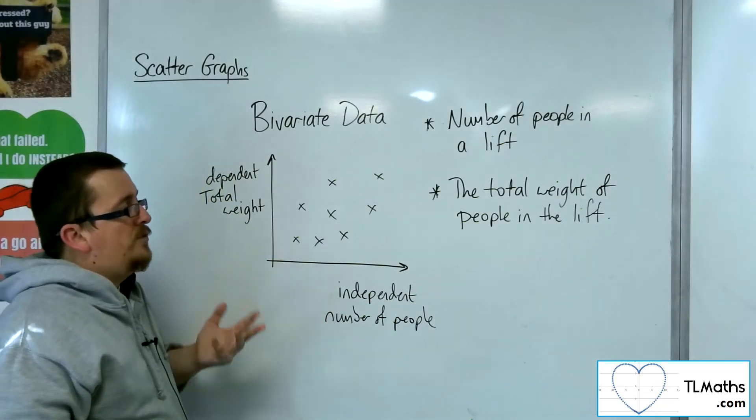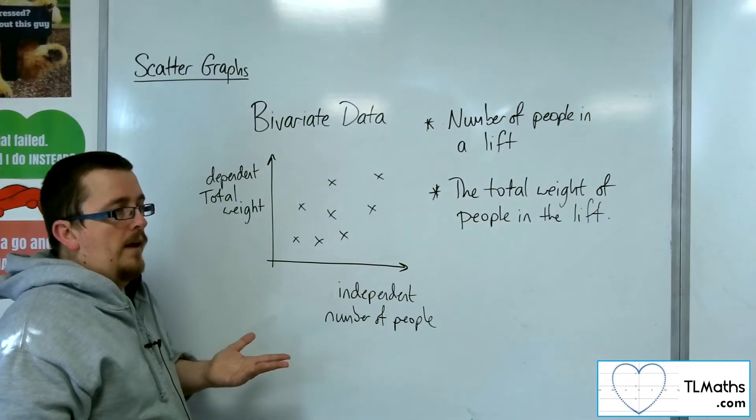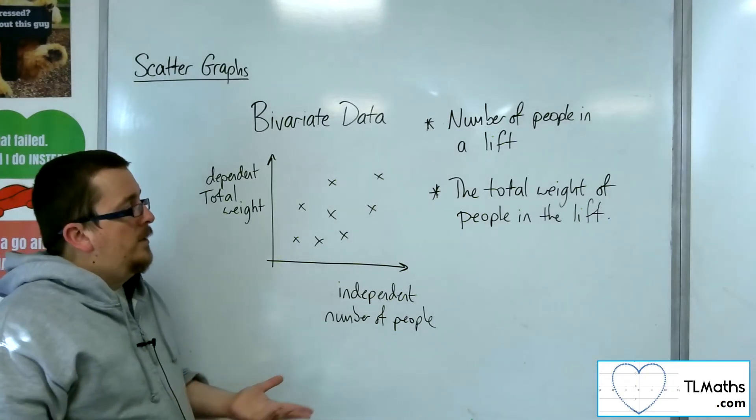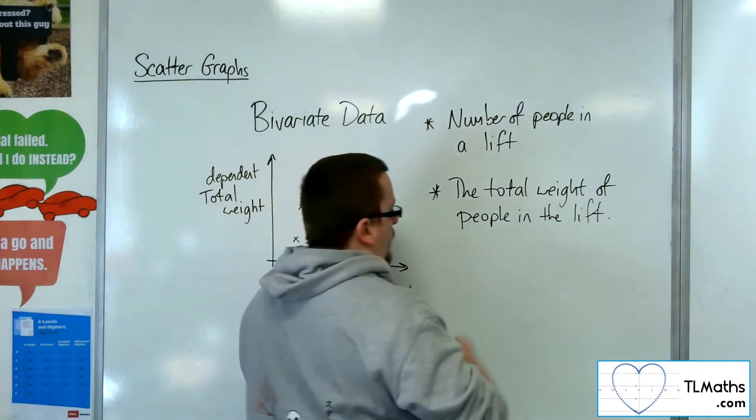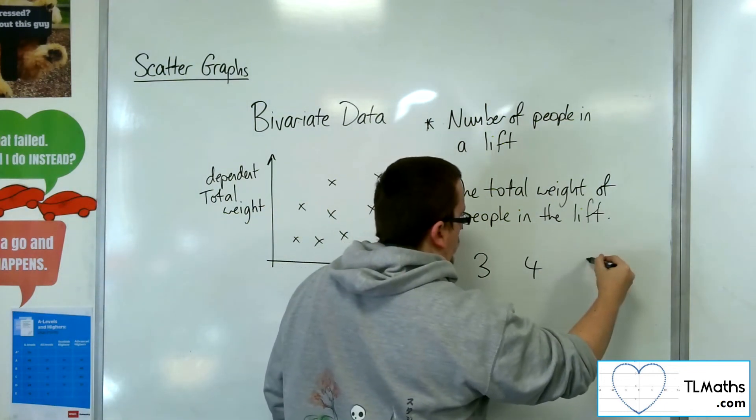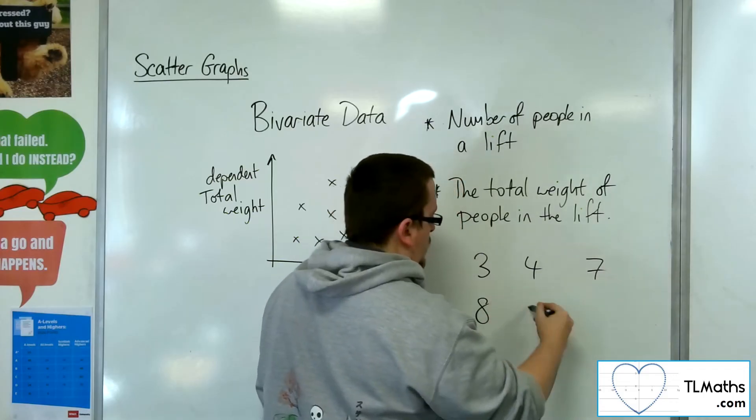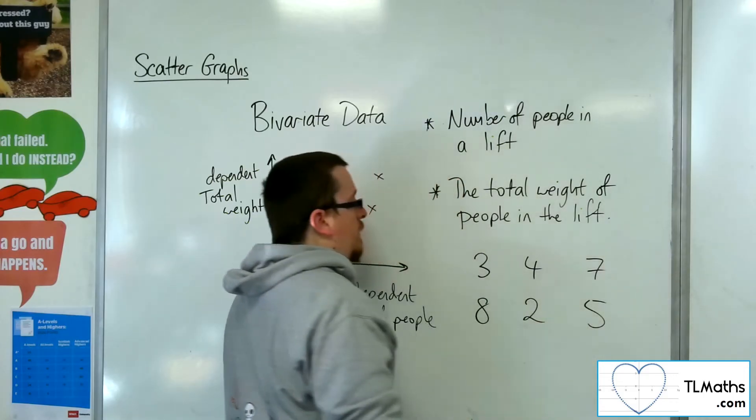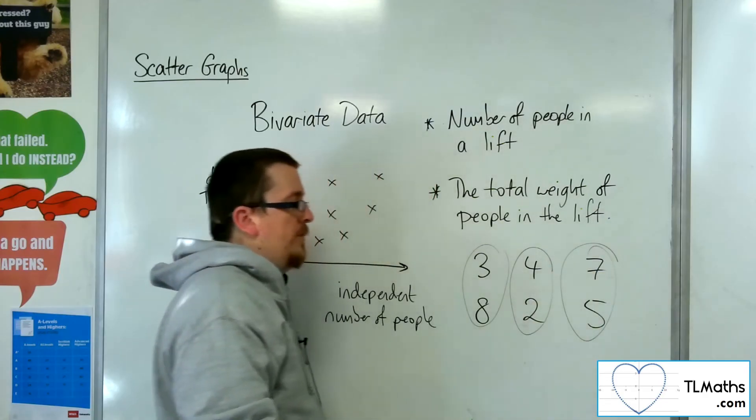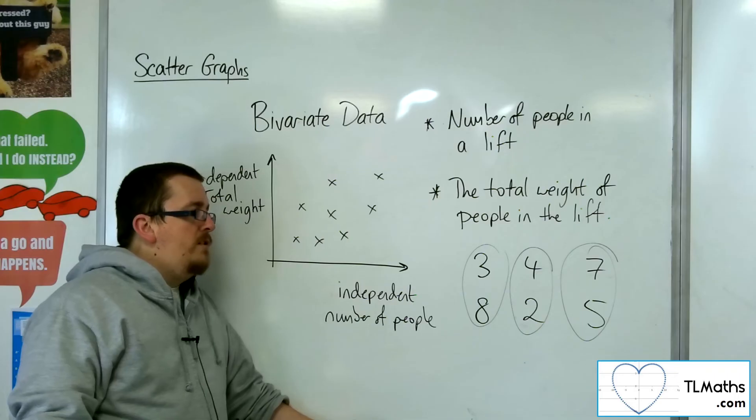OK, now in some cases, if I just gave you a set of numbers with no context whatsoever, and I said plot these numbers, so 3, 4, 7, 8, 2, 5, OK, and plot these as pairs of numbers, as coordinates, then there's no real,